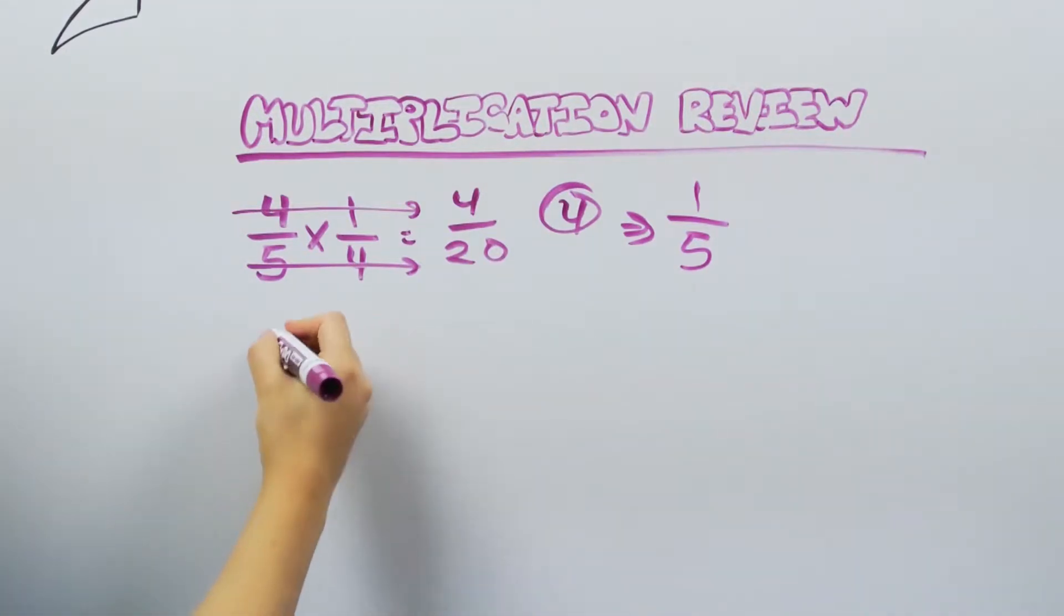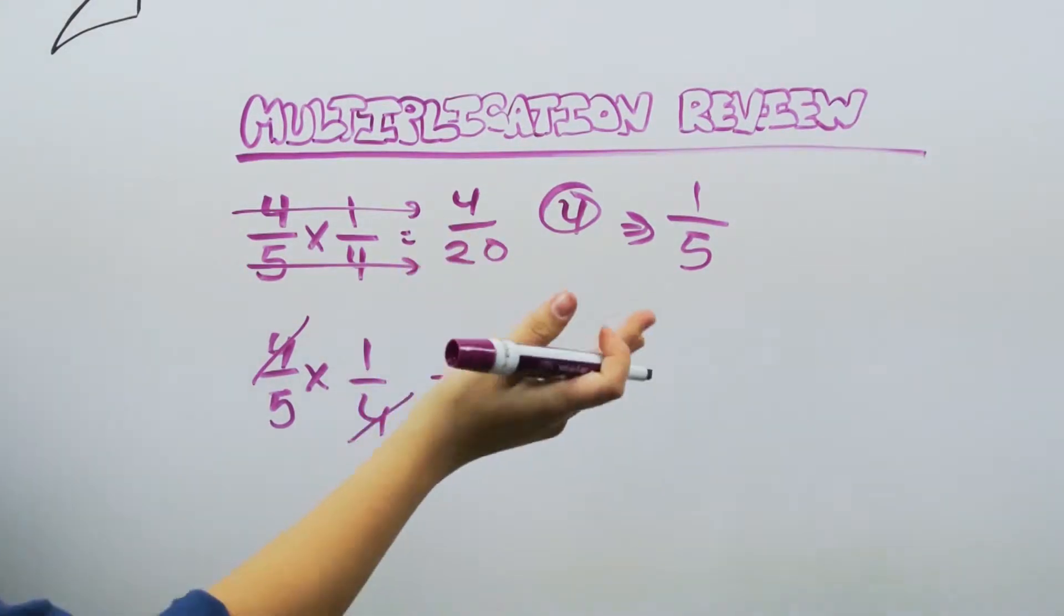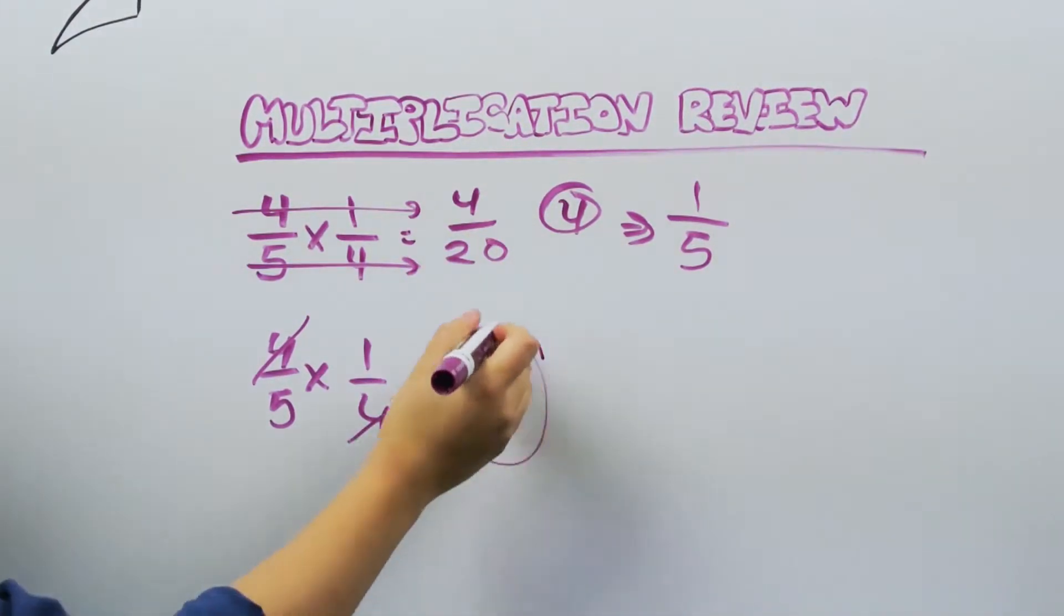And with a bit of foresight, we may have noticed as we were multiplying that 4 and 4 are the same over here, so we could have just reduced the fraction right away. Either way that you get to this final answer, just make sure that whenever you're done, the fraction is fully reduced. To learn more about this, you can check out our reducing fractions video.